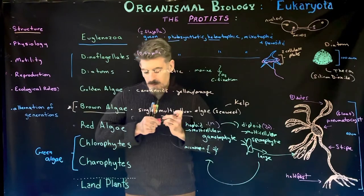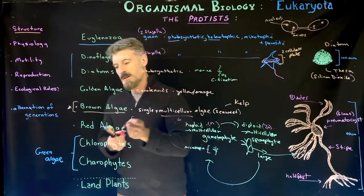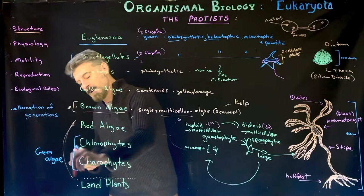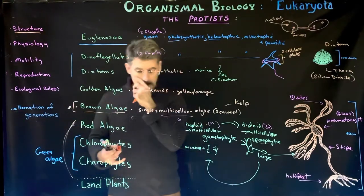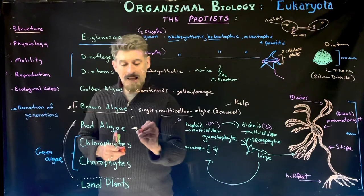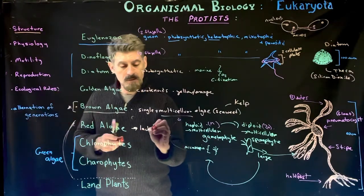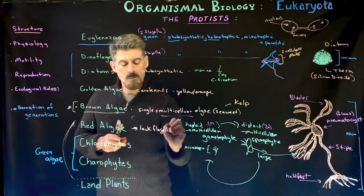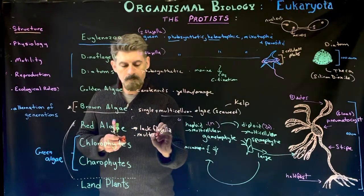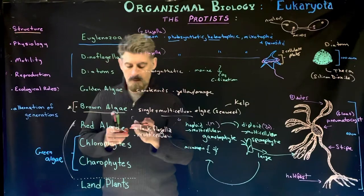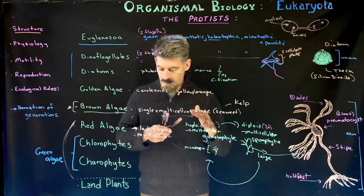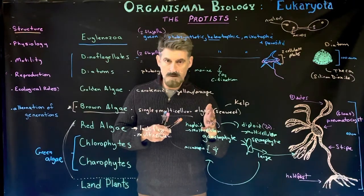Red algae are their own unique group and are sometimes placed in a broader grouping with green algae because they are closely related, but they are pulled out due to their different photosynthetic pigments. They typically lack flagella — which is one distinguishing feature. Many are multicellular marine algae, but there are also freshwater red algae and some found in moist terrestrial environments.